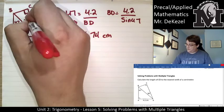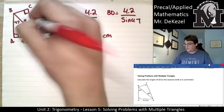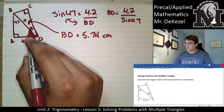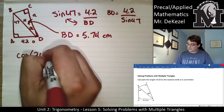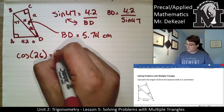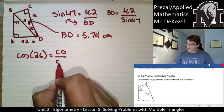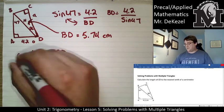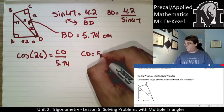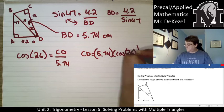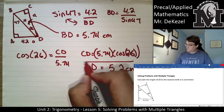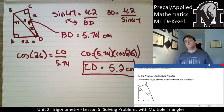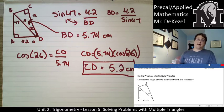Now we have that shared side. With an angle of 26 degrees and side BD of 5.74 centimeters, we can find CD. From the 26-degree angle of reference, BD is the hypotenuse and CD is the adjacent side, so we use cosine. Cosine of 26 equals CD over 5.74. Multiplying both sides, CD equals 5.74 times cosine of 26, giving CD equal to 5.2 centimeters. We solved one piece of the shared triangle first, then found the last piece after that.